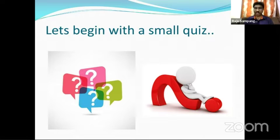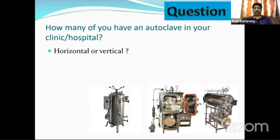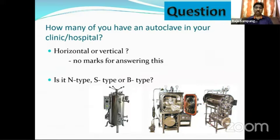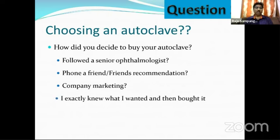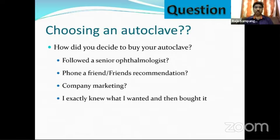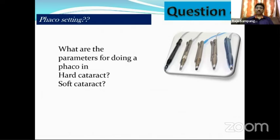Before I start, let us begin with a small quiz for the audience. You might be using an autoclave in your hospital — is it a horizontal autoclave or a vertical autoclave? The next question: is it a Type-N, Type-S, or a Type-C autoclave? And how did you decide to buy your autoclave? Did you follow a senior ophthalmologist, phone a friend, follow company marketing, or did you exactly know what you wanted and then bought it? Can you identify which is the steam in this photograph?